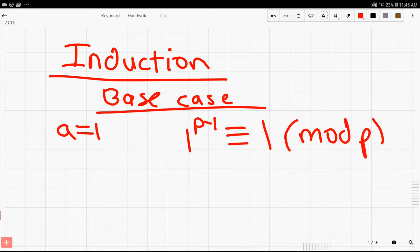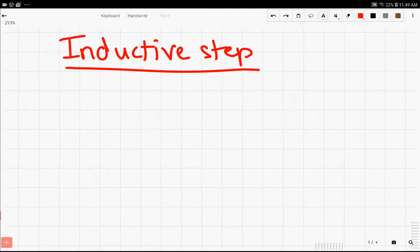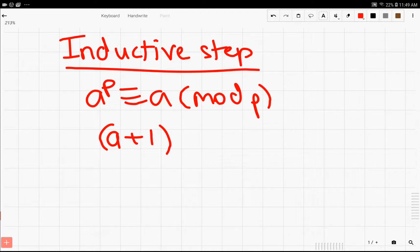So we have finished our base case. Now for our inductive step, we're going to prove that assuming a^p is equivalent to a mod p, then (a+1)^p must also be equivalent to (a+1) mod p.